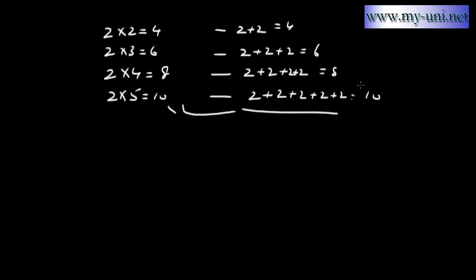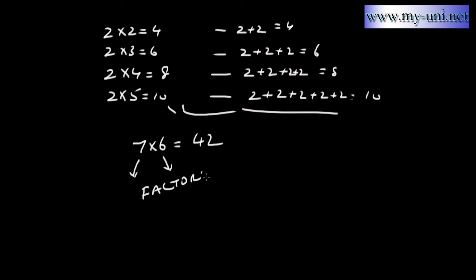This is how you represent repeated addition of the same numbers. Now, one more thing: 7 times 6 equals 42. When you have a multiplication like this, the numbers being multiplied are known as factors, and the result is known as the product.